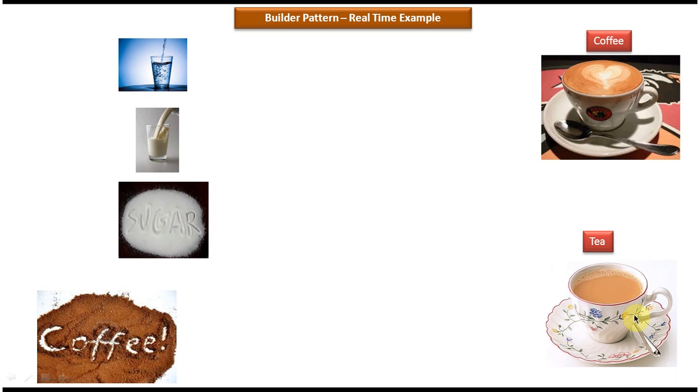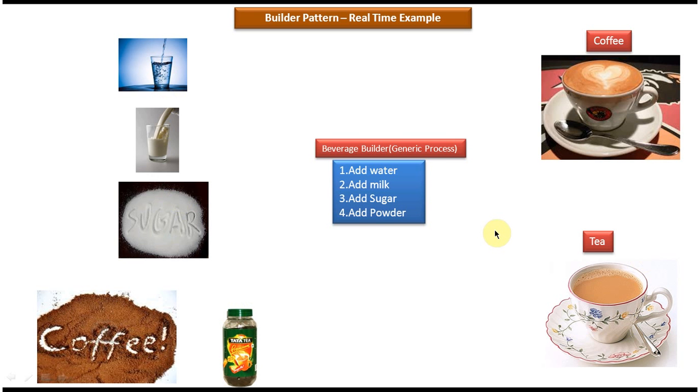And suppose you want to prepare the tea. Then what I have to do is, I have to use components like water, milk, sugar, and instead of the coffee powder, I would use tea powder. Right, so using these simple objects I can prepare the tea.